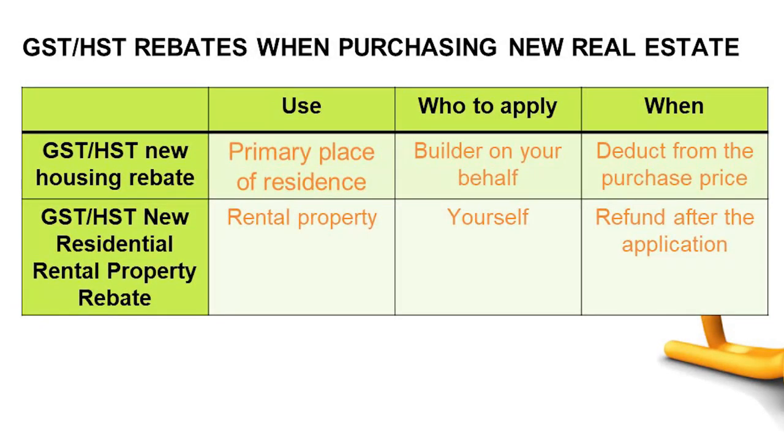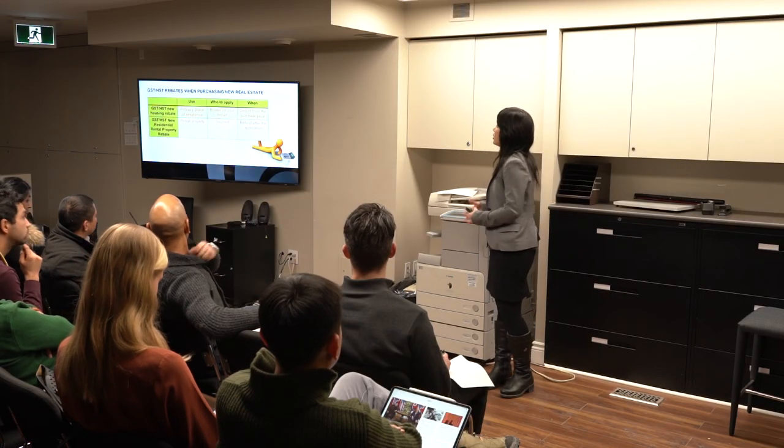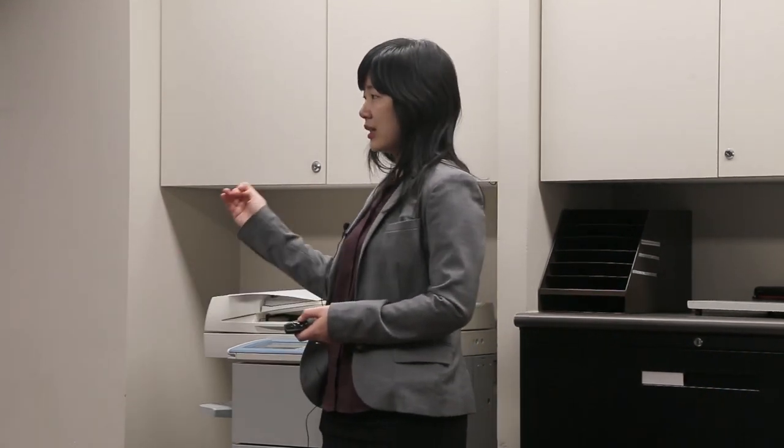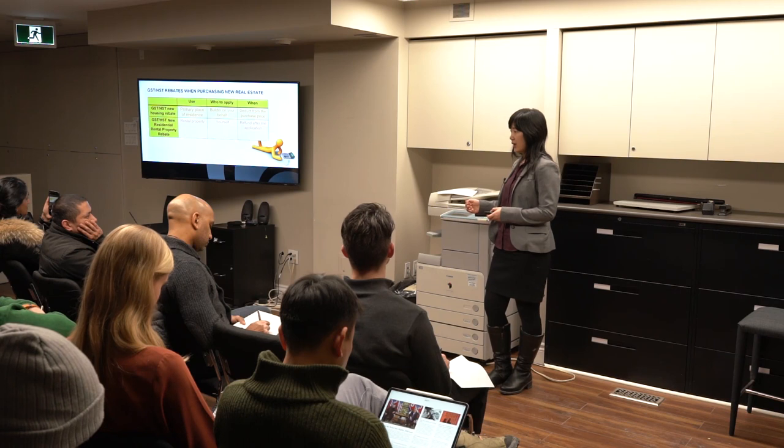There are two types of HST rebates for this. The first one is called the new housing rebate, which is for when you buy the property and then use it as your primary place of residence. You don't need to apply for yourself — the builder will normally apply on your behalf and collect the money. So the amount you need to pay to the builder on the closing day is actually less, because it's the agreed purchase price plus the HST minus the rebate you're supposed to get, so you're paying less at the closing date.